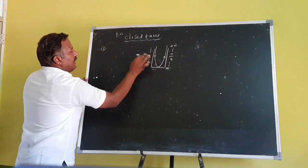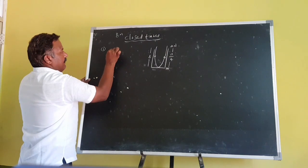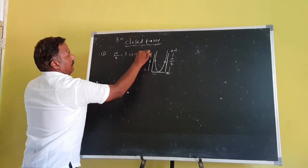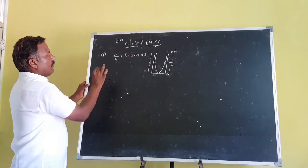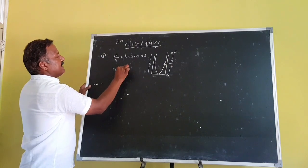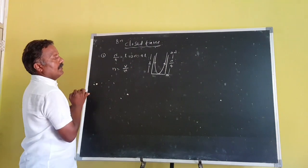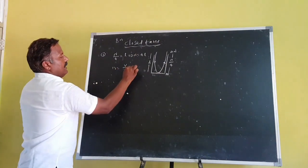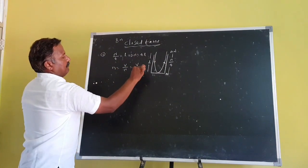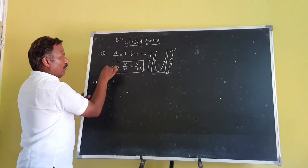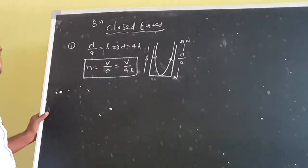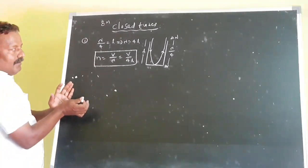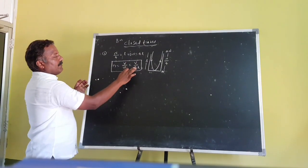From the figure, λ/4 = L. After cross multiplication, λ = 4L. From V = Nλ, N = V/λ. The lambda value is 4L, so substituting: N = V/4L. This is the fundamental frequency of the closed tube. Note that for an open tube the fundamental frequency is V/2L, but for a closed tube it is V/4L.